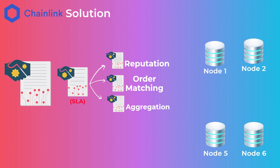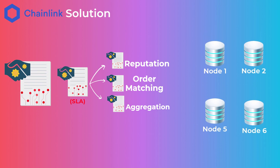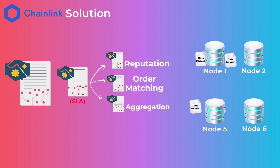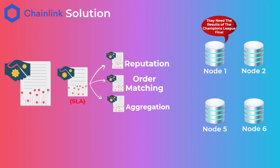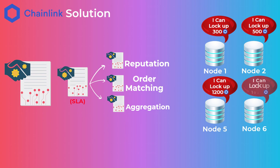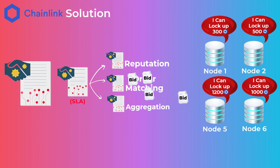Next, we have the order matching contract. After the reputation contract makes its list, the order matching contract sends the data request to all the oracle nodes on that list. The nodes then send their bids — an amount of LINK tokens an oracle locks up as a guarantee that they won't send wrong information. The order matching contract then selects a number of these oracle nodes to complete the job and provide the requested data.